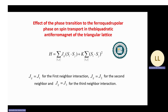We analyze the effect of the phase transition to the ferroquadrupolar phase on spin transport in the biquadratic antiferromagnetic triangular lattice. The model is given by a Hamiltonian with two different terms, where the last term is the effect of biquadratic coupling. We have exchange interactions J1, J2, and J3 that consider the effects of first, second, and third-neighbor interactions on the lattice.